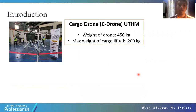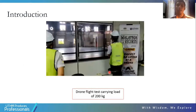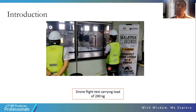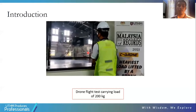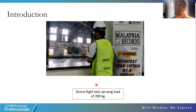For the introduction, this research is focused on the cargo drone C20H, with the weight of the drone itself at 450 kg and the maximum weight of cargo lifted at 200 kg. Due to this maximum cargo weight, it has been recognized by the Malaysia Book of Records in 2021 as the heaviest load lifted by a drone. This is a video of the drone being tested to carry a load of 200 kg — you can see how large the drone is.